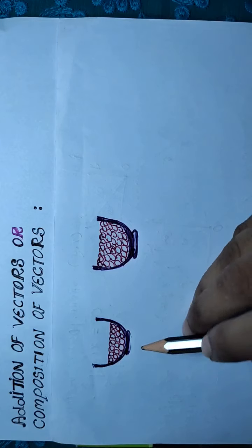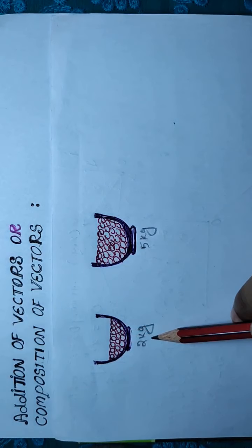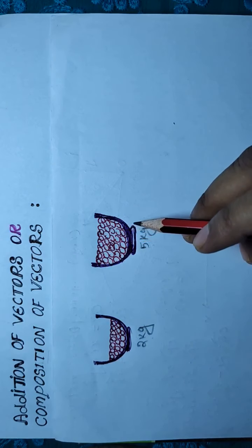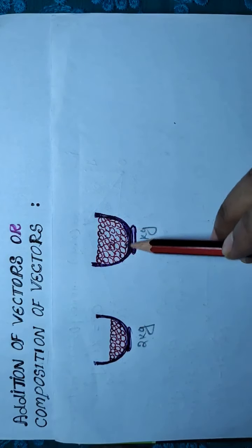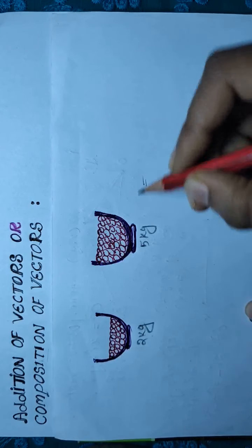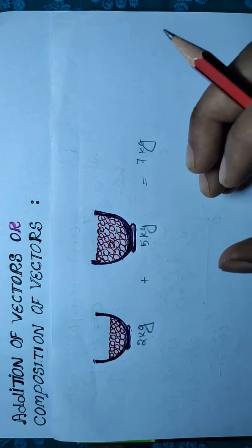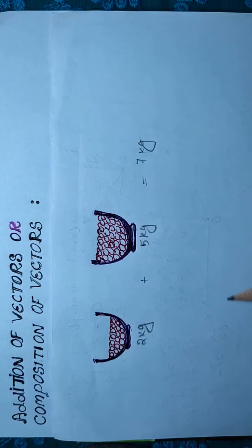For example, suppose you have a ladoo of 2 kg and another ladoo of 5 kg of the same type. To find the total amount of ladoo, you simply add them algebraically: 2 kg plus 5 kg equals 7 kg, because this is a scalar quantity.